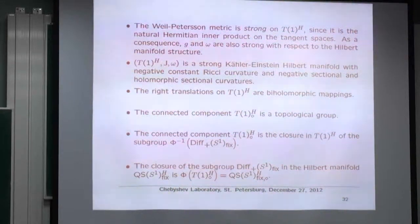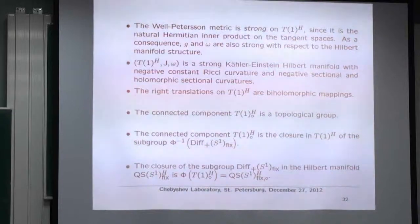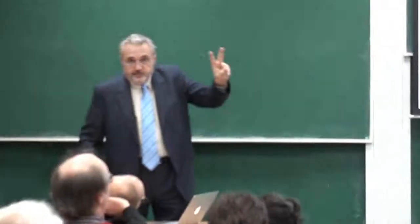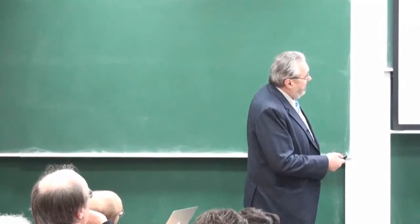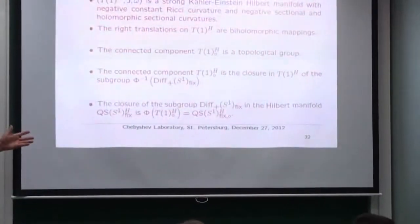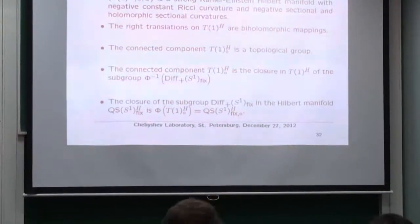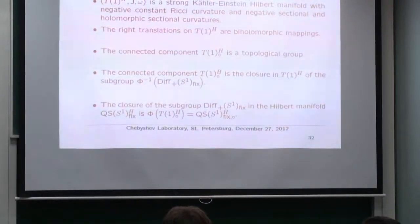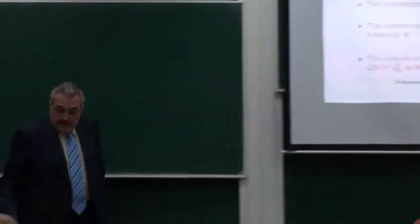Takhtajan and Teo additionally prove: negative constant Ricci curvature, negative sectional and holomorphic sectional curvatures; right translations are biholomorphic; the connected component is a topological group — so they cured the first disease in the process. The connected component of T₁_H is the closure of where C∞-diffeomorphisms of the circle live, and the closure of the diffeomorphisms fixing three points is the Hilbert manifold of quasi-symmetric homeomorphisms fixing three points. It's exactly what you want.